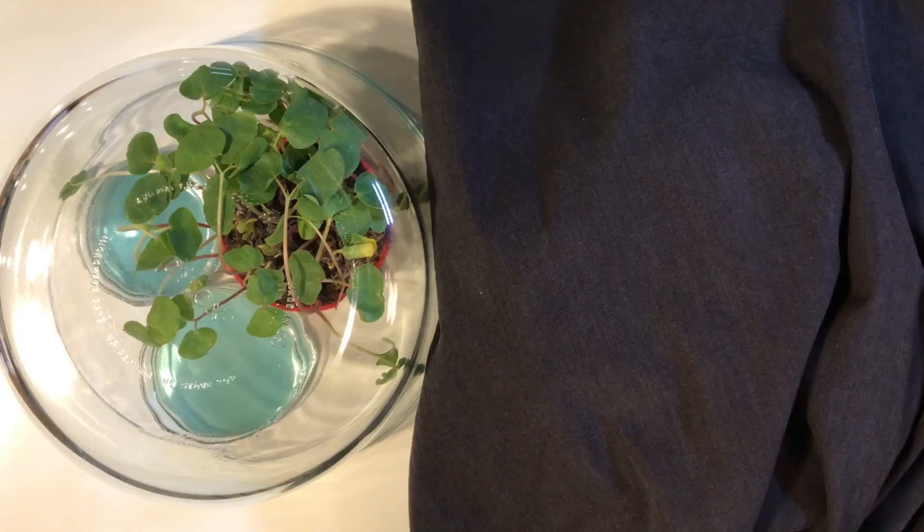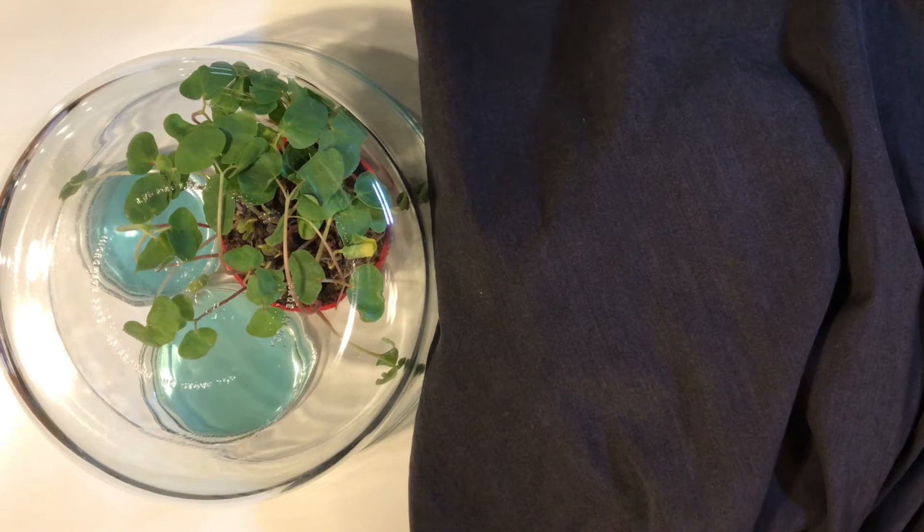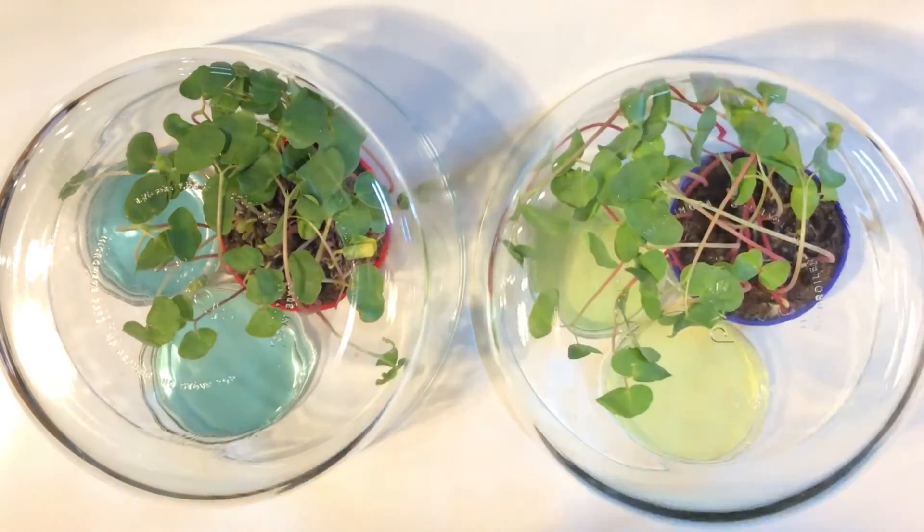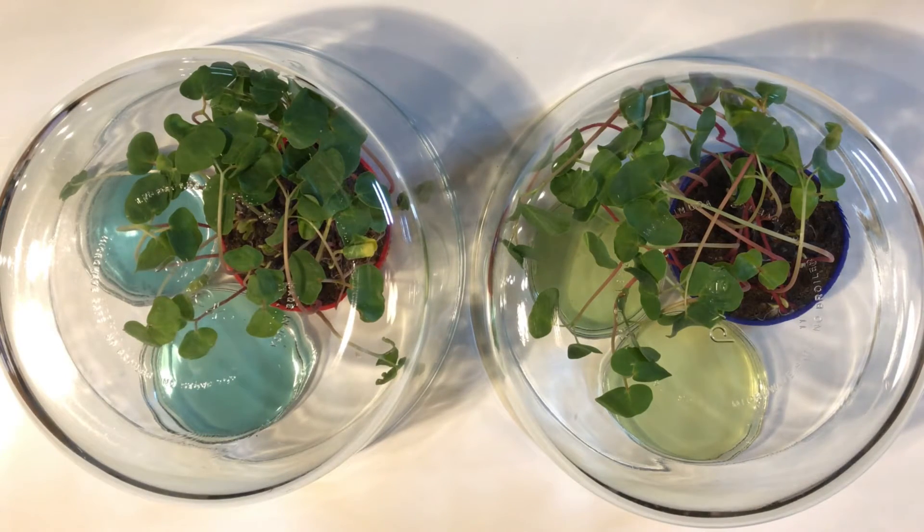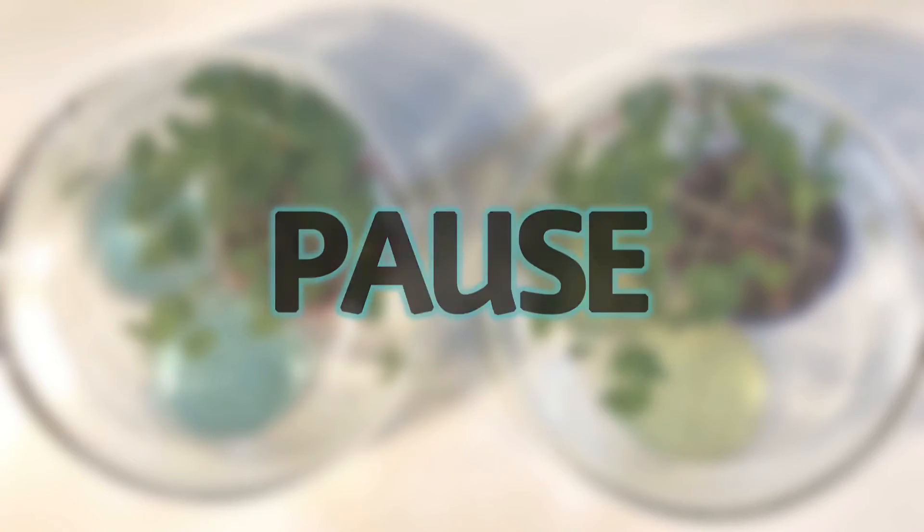So let's look at our results. The plants that were exposed to light turned the yellow BTB more greenish. The plants in the dark seem to have done the opposite and turned the greenish BTB yellow. At this point, go ahead and pause the video and see if you can figure out what these results mean.